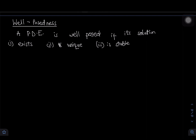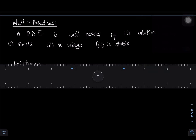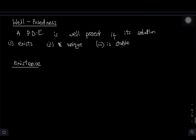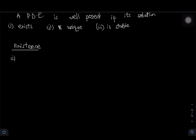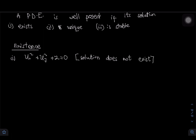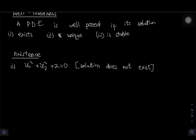Let's pick counter-examples — instances where you won't have existence, uniqueness, or stability. For existence, consider the equation ux² + uy² + 2 = 0. This has no solution; the solution does not exist for this PDE. So automatically this PDE is not well-posed — it is ill-posed.